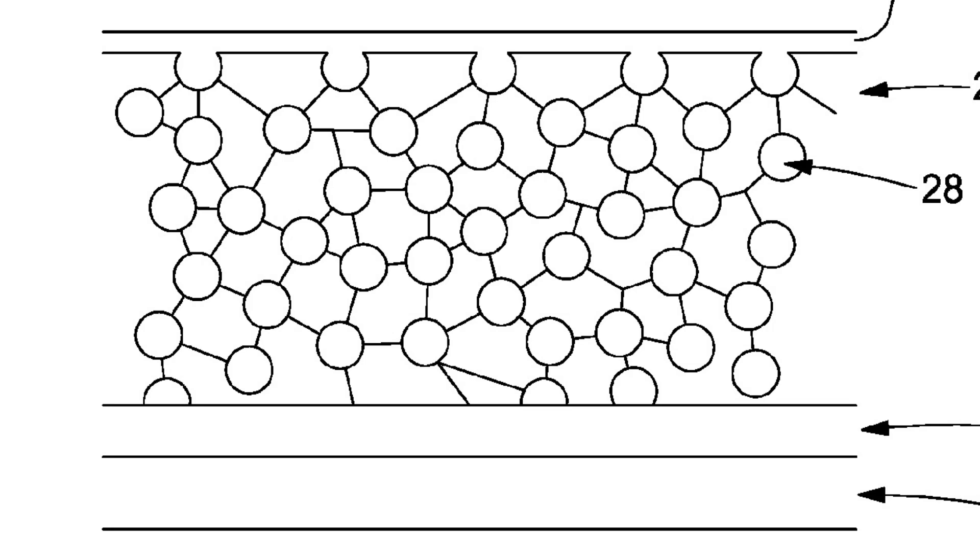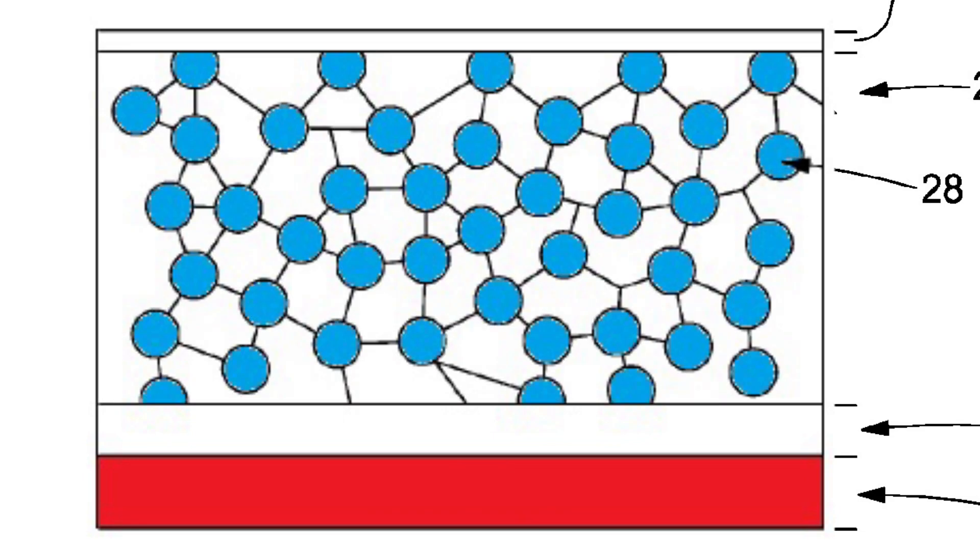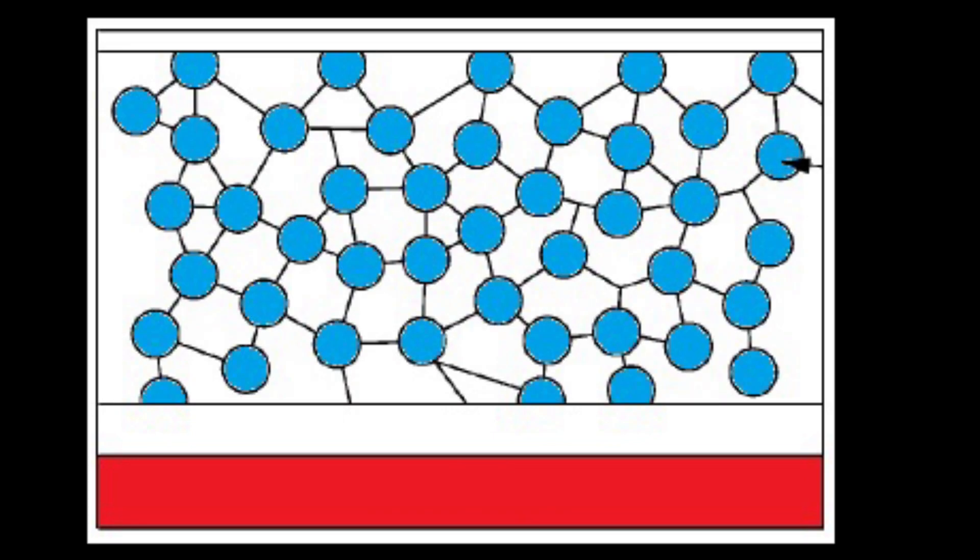This system describes printing colored dyes on a surface and then coating the surface with a polymer. The polymer coating makes it so you can't see the colors printed on the surface.